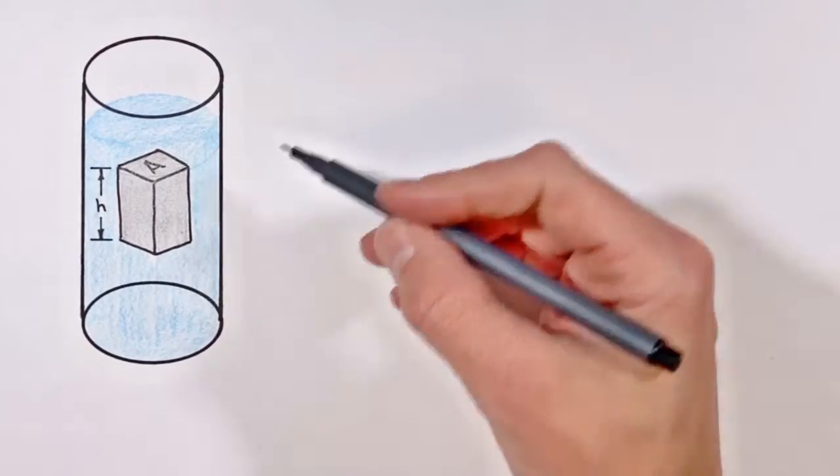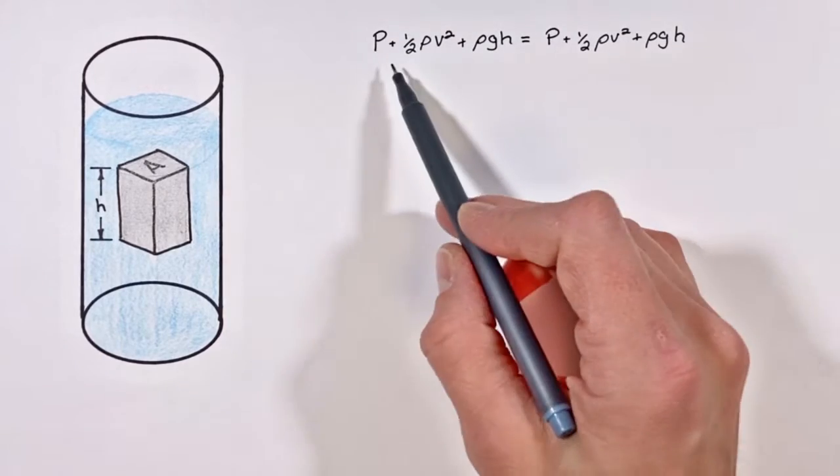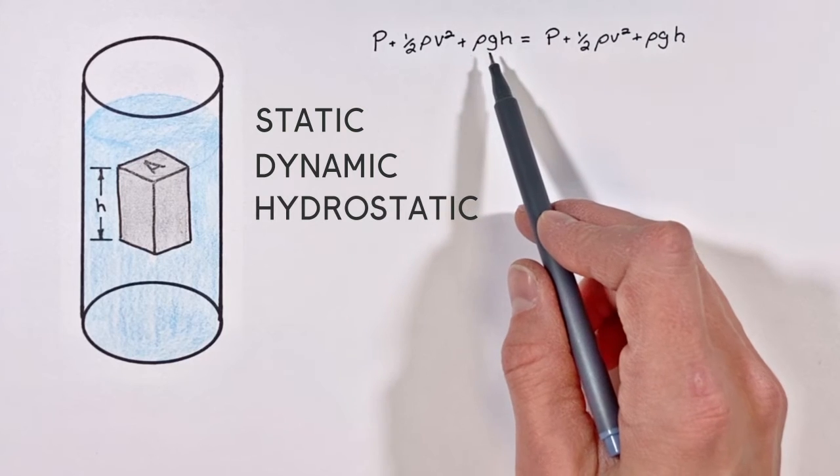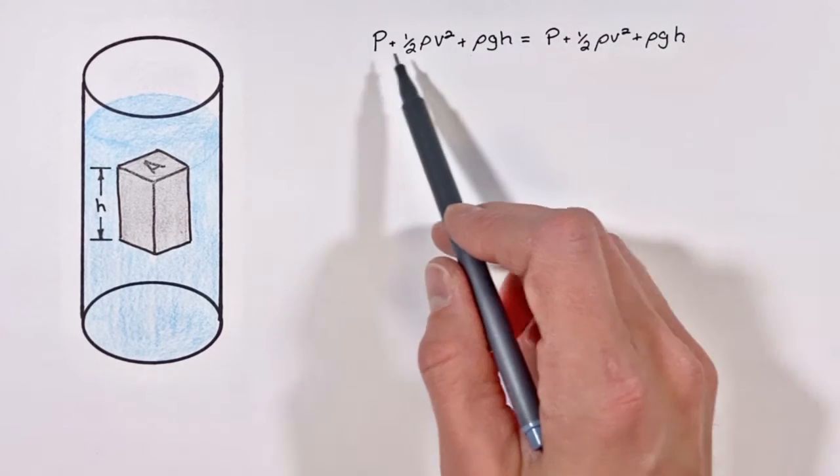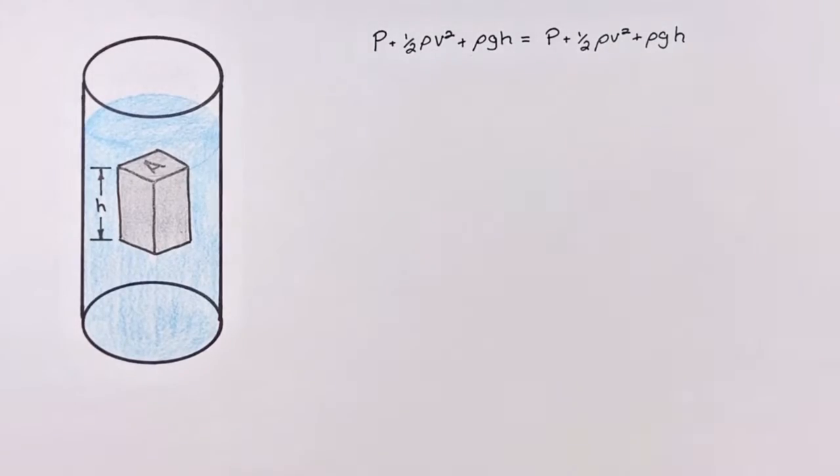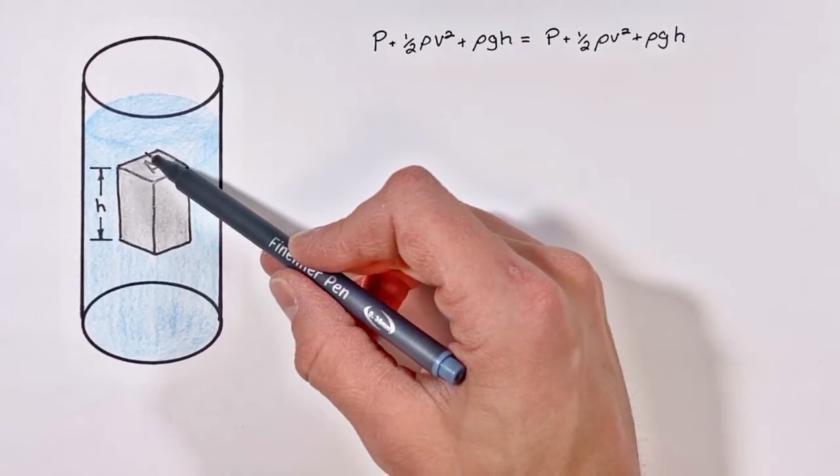Bernoulli's law takes a look at three different types of pressures: static, dynamic, and hydrostatic pressures. And what it says is the sum of those three pressures at any two points within a fluid needs to be equal to one another. So what we're going to do today is take a look at fluid acting on the top of this block and fluid acting against the bottom of the block.